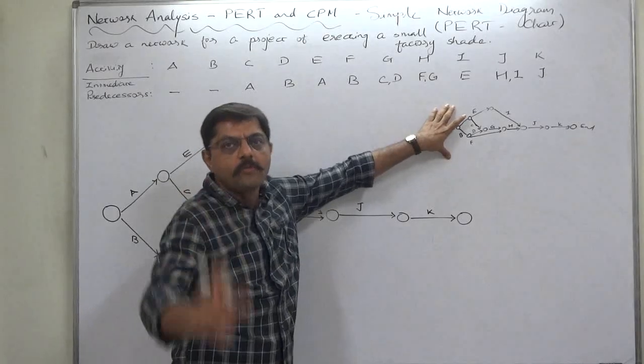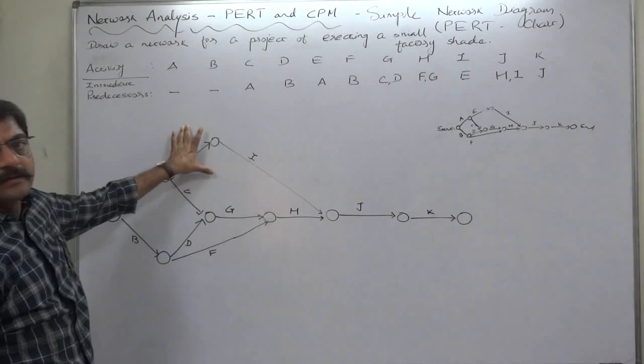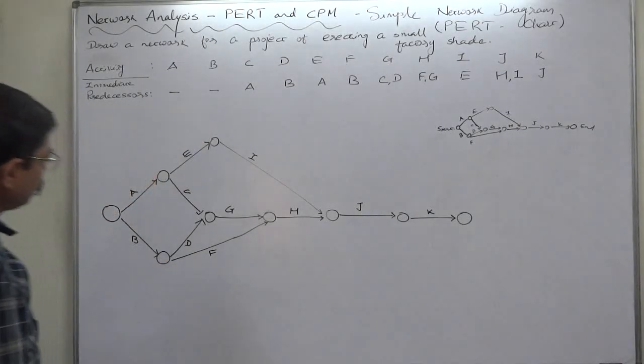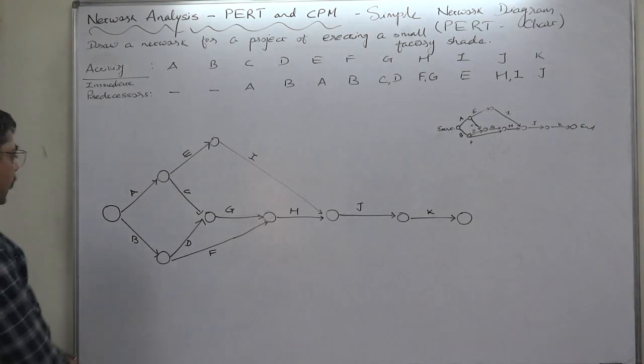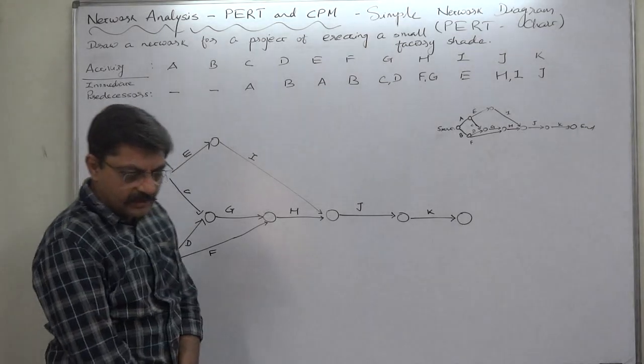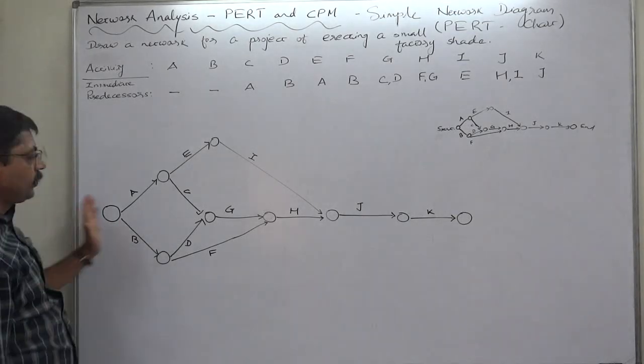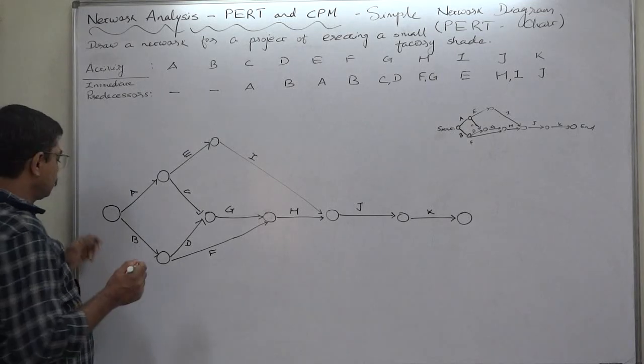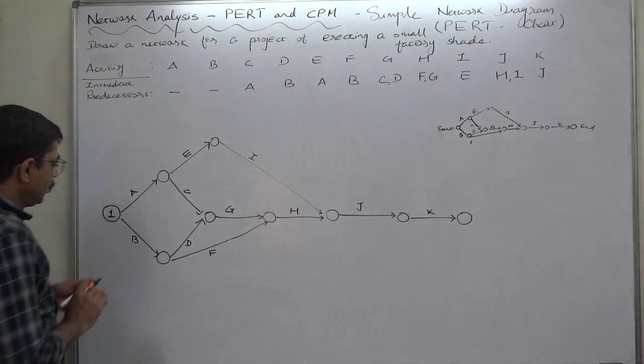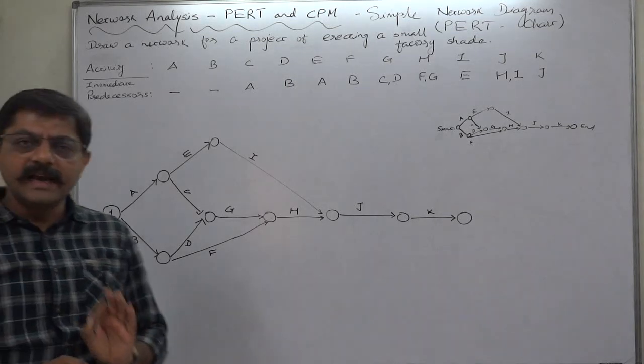I advise you to go for this kind of one or more rough ones, then only go for drawing the final network diagram. Now the turn of numbering the nodes. As I discussed in the earlier lecture, just go from left to right.